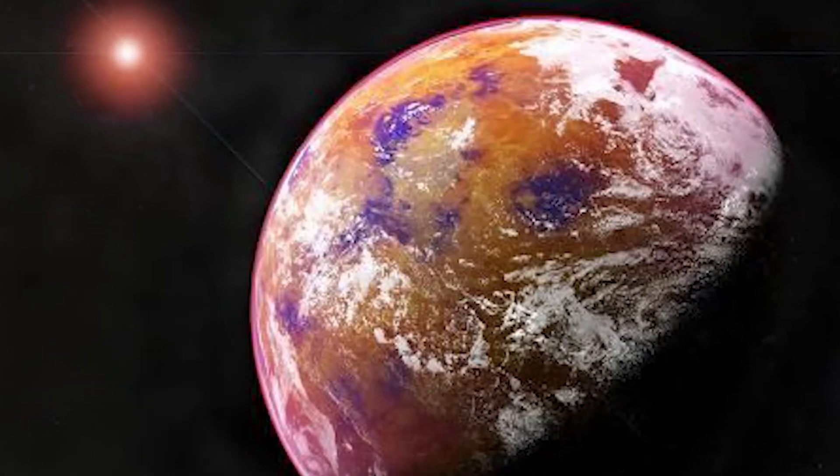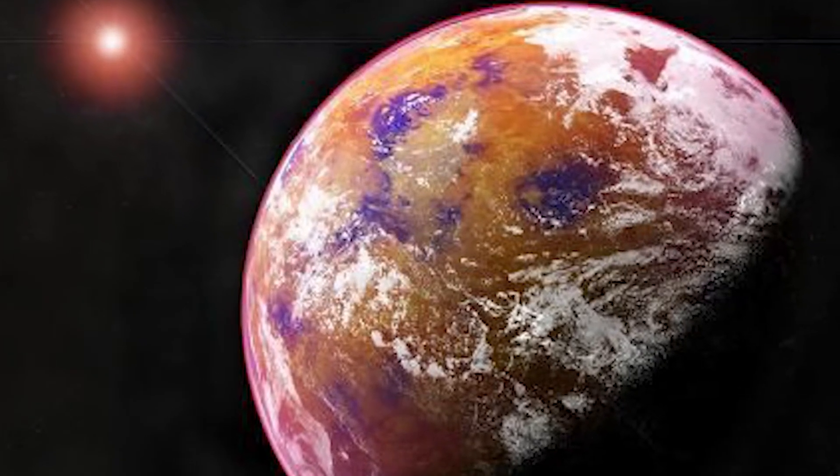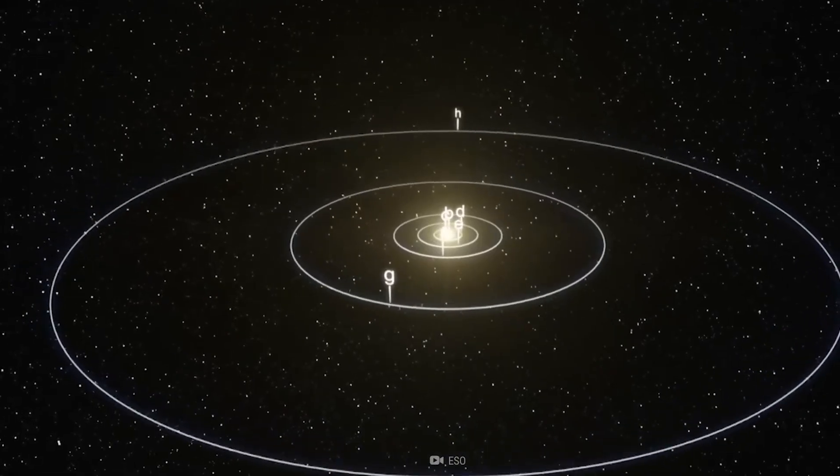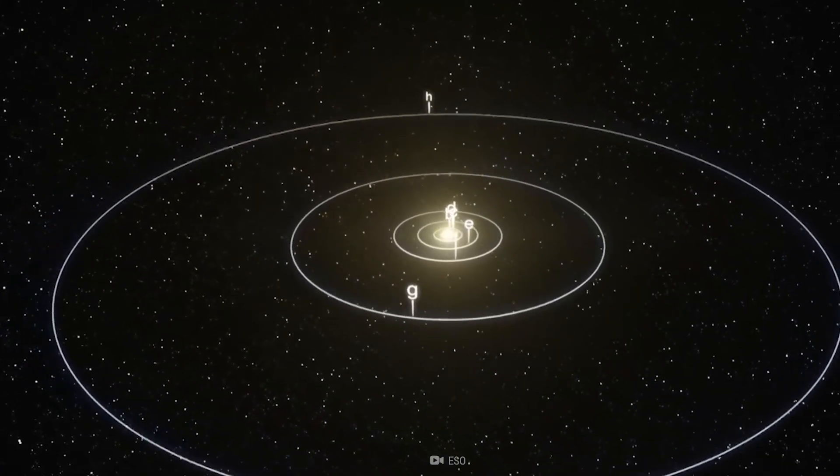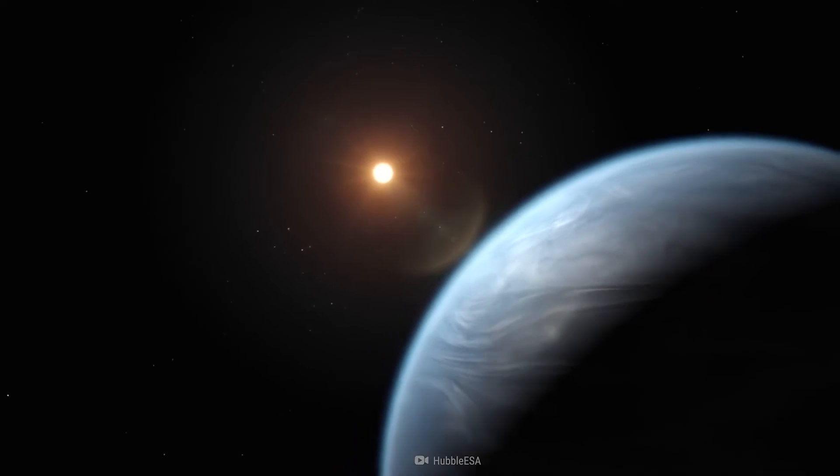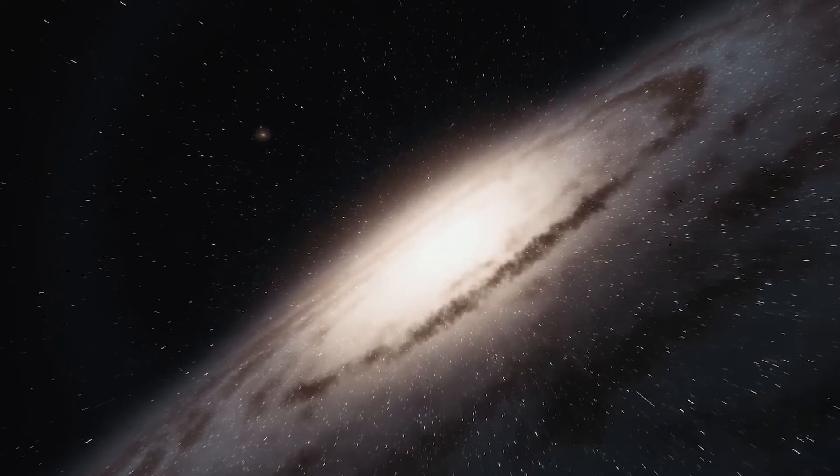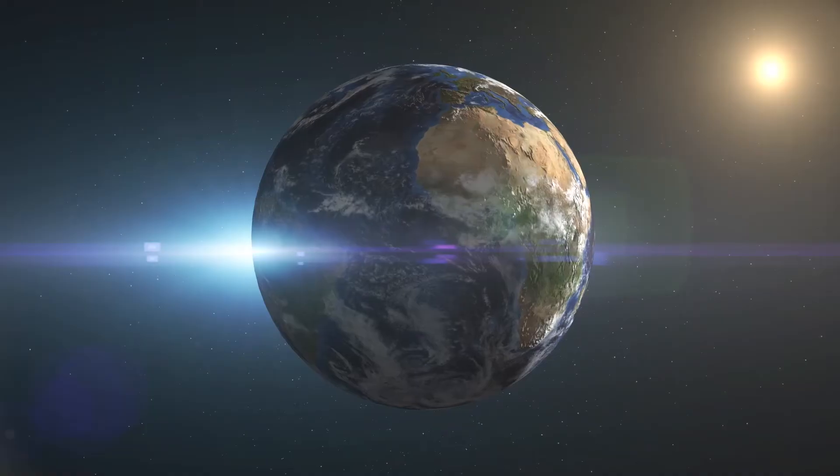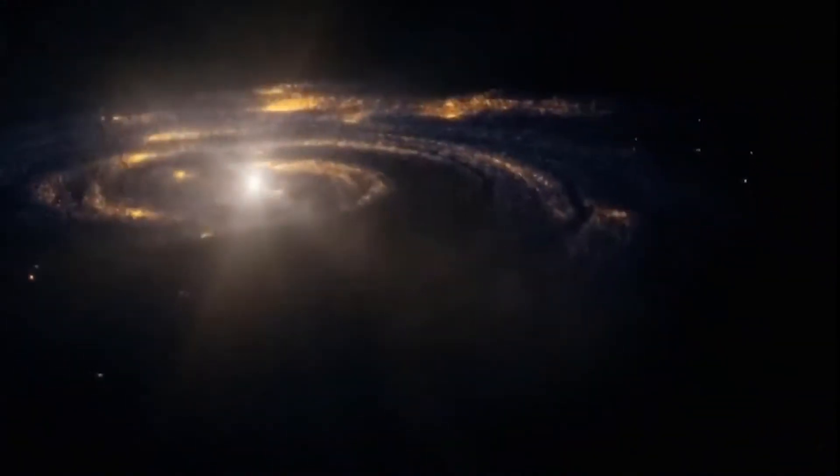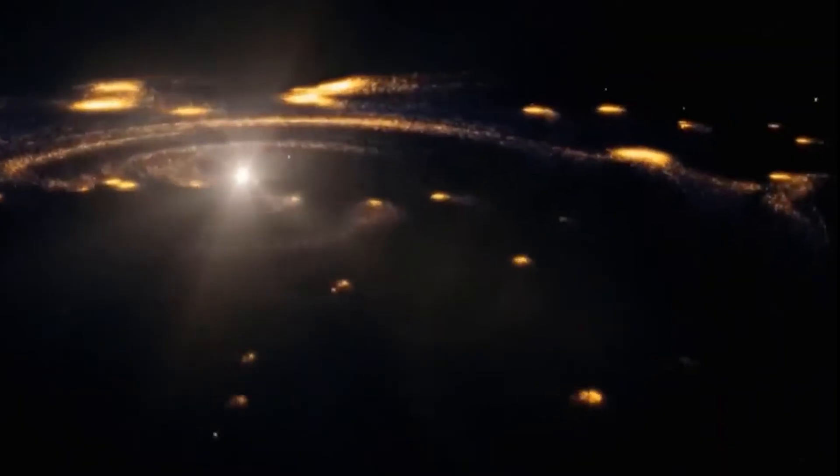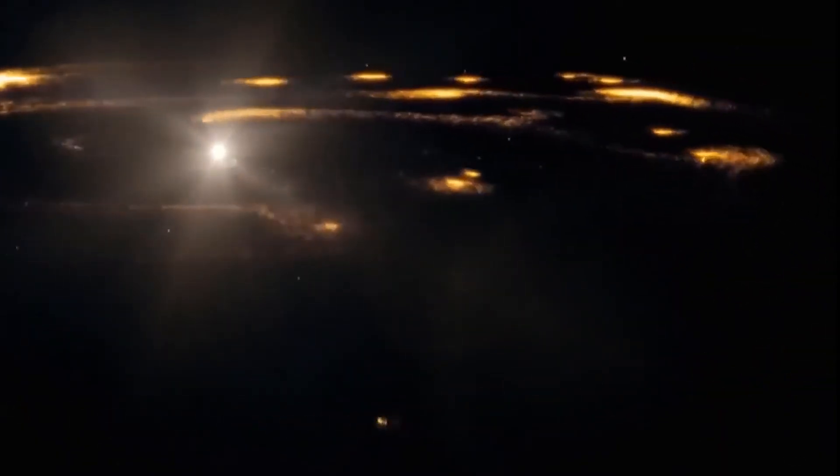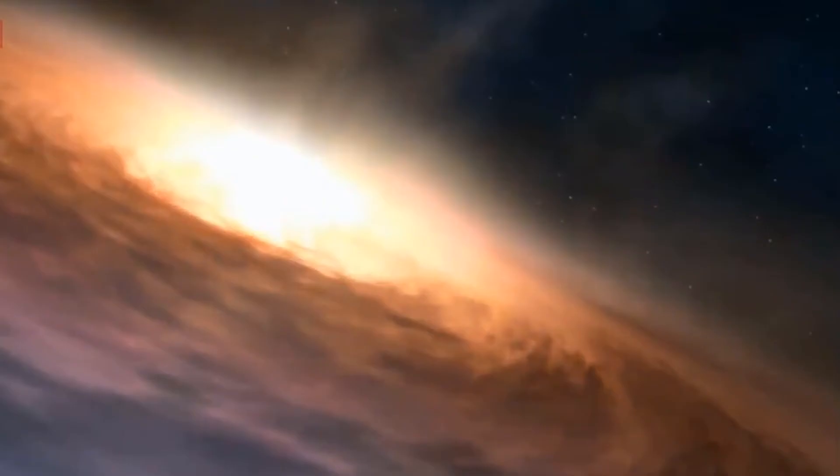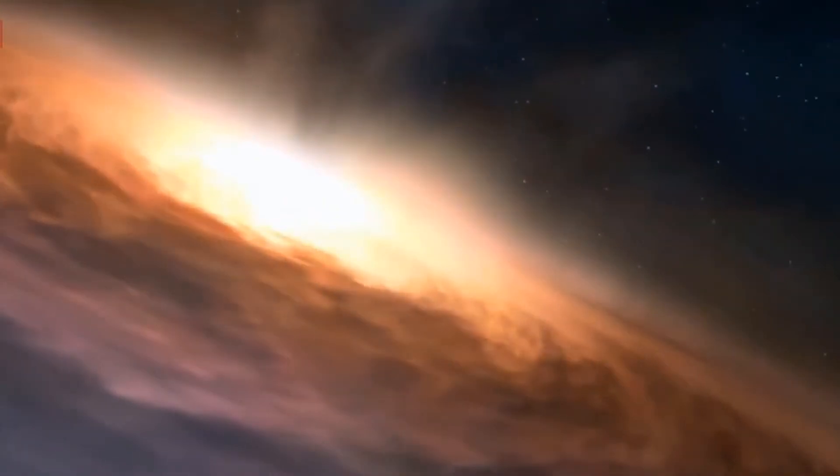Number nine, Proxima Centauri B. NASA exoplanet exploration, Proxima Centauri is the closest exoplanet to Earth and is only 4 light-years away. The exoplanet's mass is 1.27 times greater than Earth's. It was found in 2016. The exoplanet is exposed to intense UV radiation while being near the Proxima Centauri star's habitable zone. This is due to its short orbital period of 11.2 days and near proximity to its parent star.